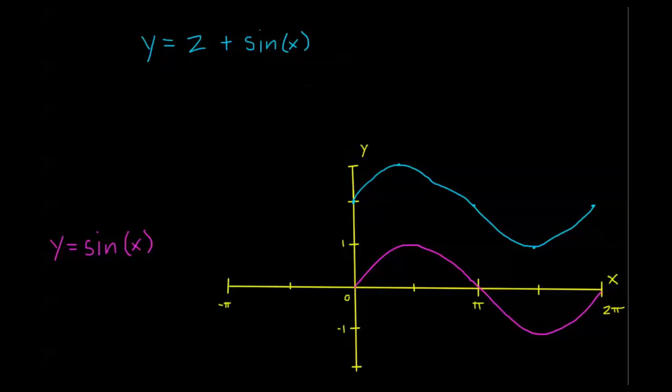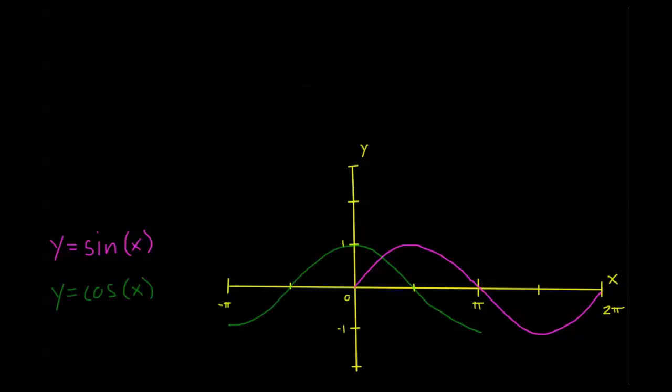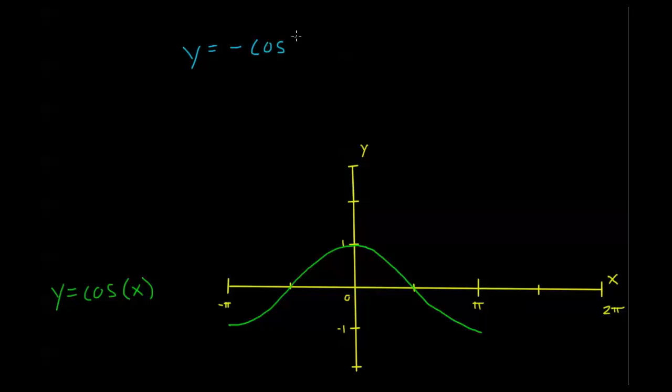Now the second type of transformation I want to talk about, and we'll use cosine for this one, is just going to be flipping the graph. What I mean by flipping the graph is if we have something like y equals negative cosine x. Well, let's figure out what that's going to be.